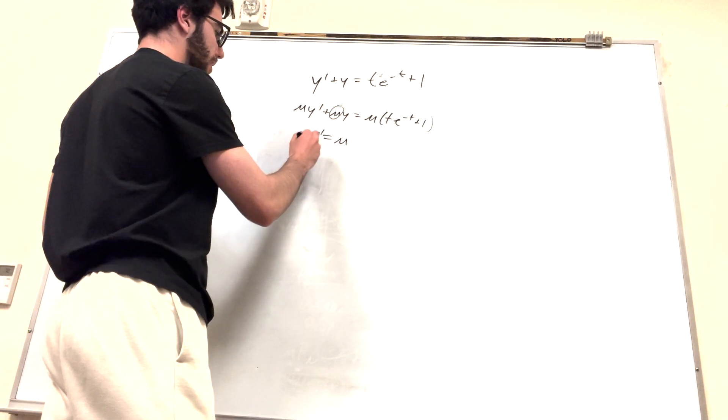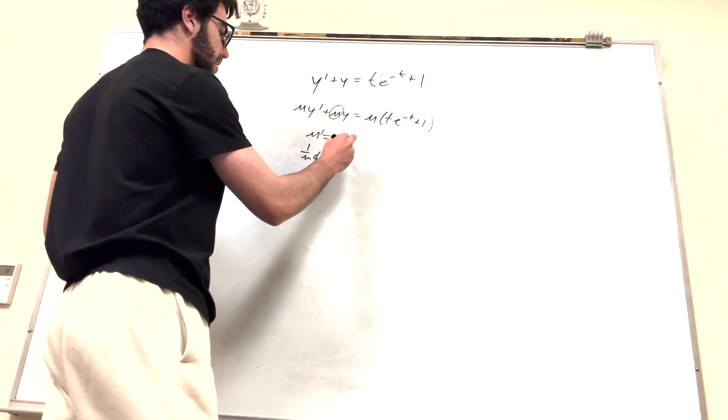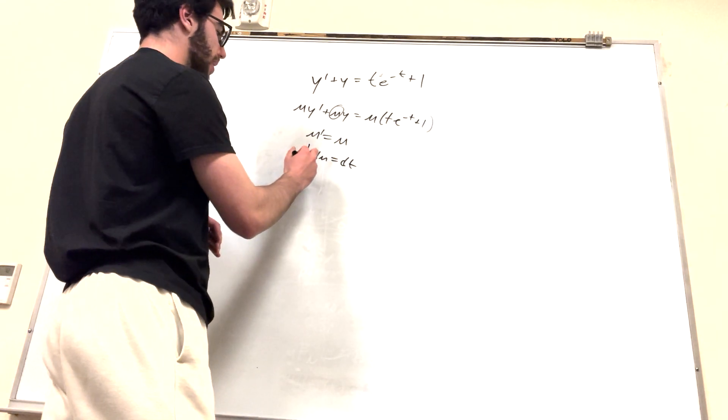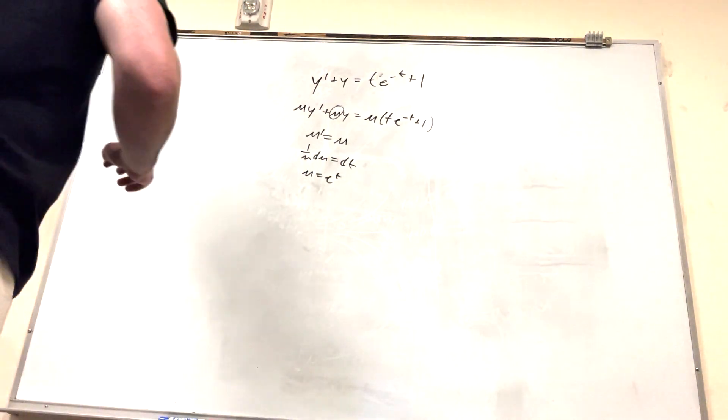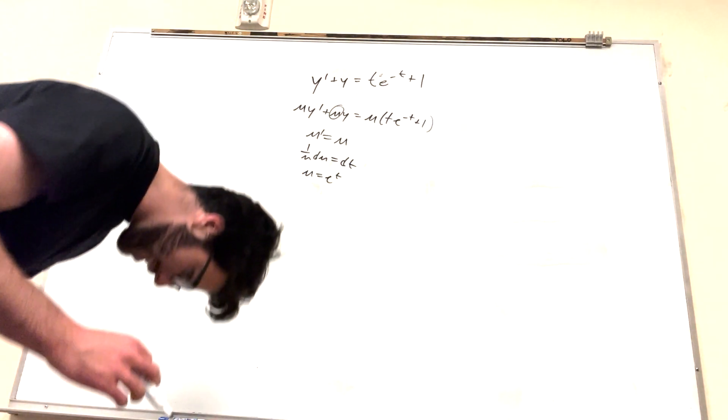So then obviously it's gonna be 1 over mu d mu is equal to d t. That's how this is gonna work out. So then it's just gonna be mu is equal to e to the t, right? Pretty simple. This is literally as simple as it gets on these kind of problems.